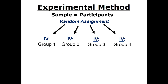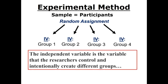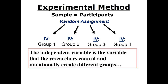Let's linger for a while on the independent variable before moving on to the dependent variable. In 2008, Tall, Acres, and Hodge conducted an experiment on the effect of paper color on exam performance. The independent variable is the variable that the researchers control and intentionally create different groups to find out how changes in this variable will affect the outcome of the experiment. Right now, we are going to focus just on the part about creating different groups.